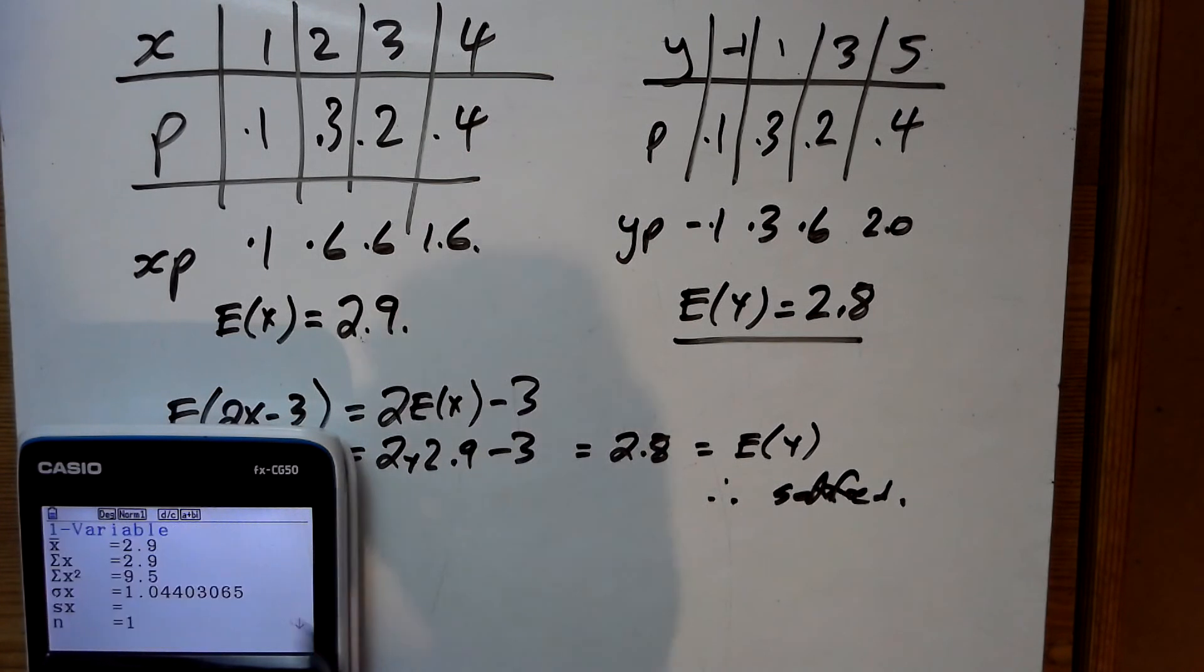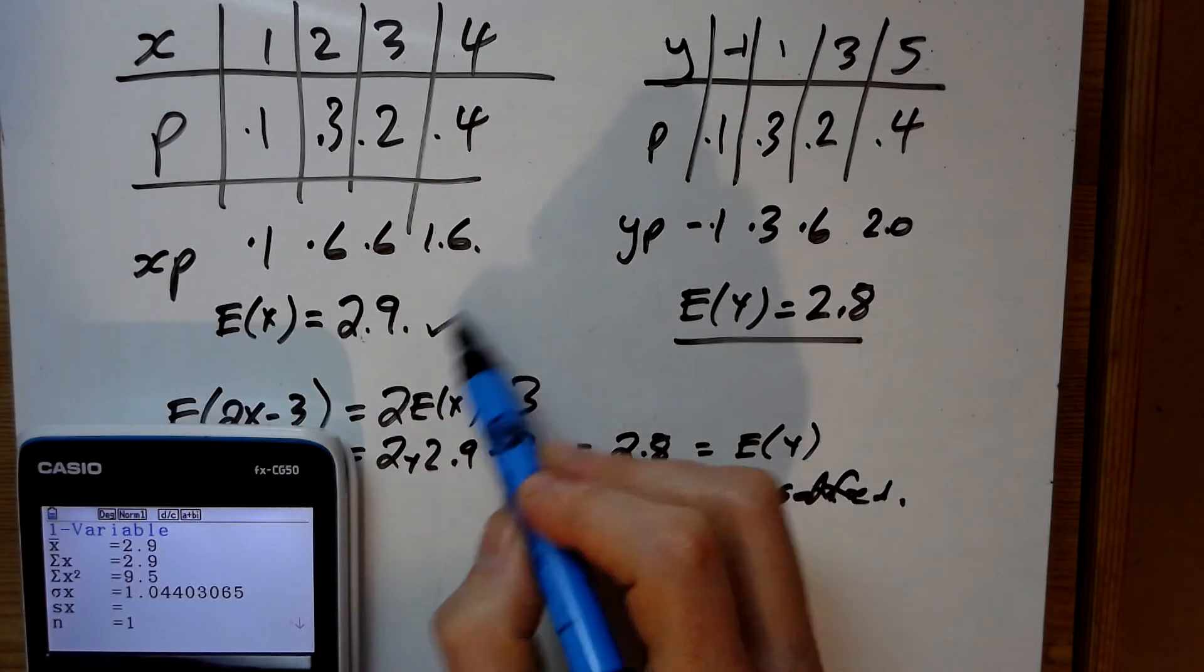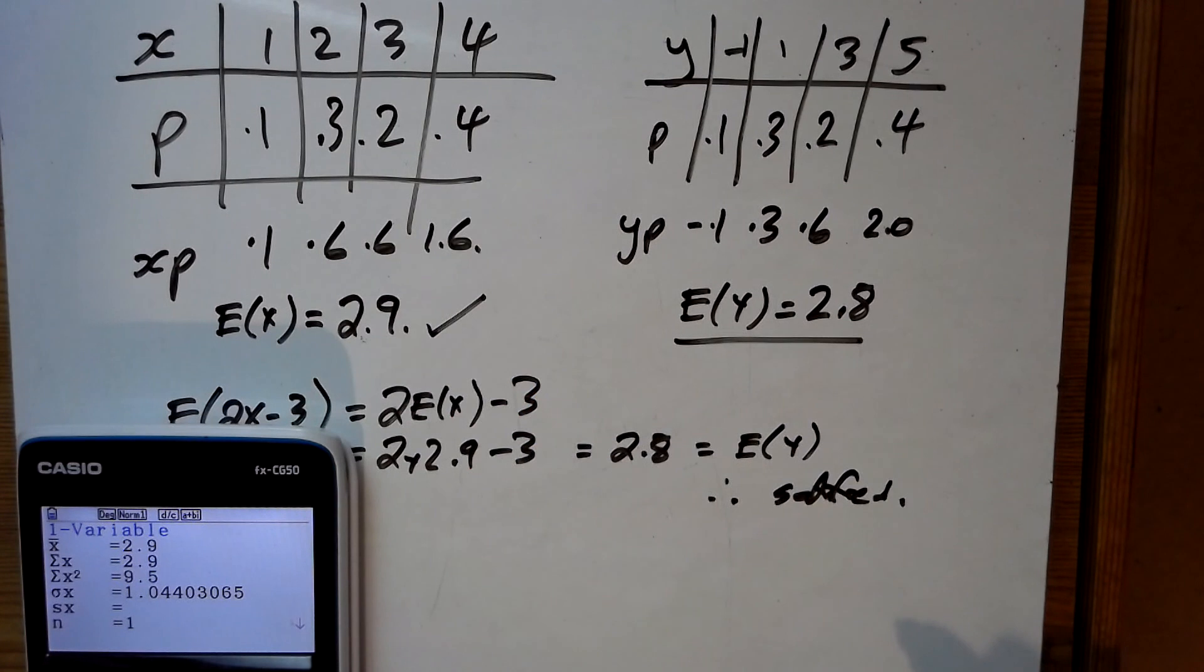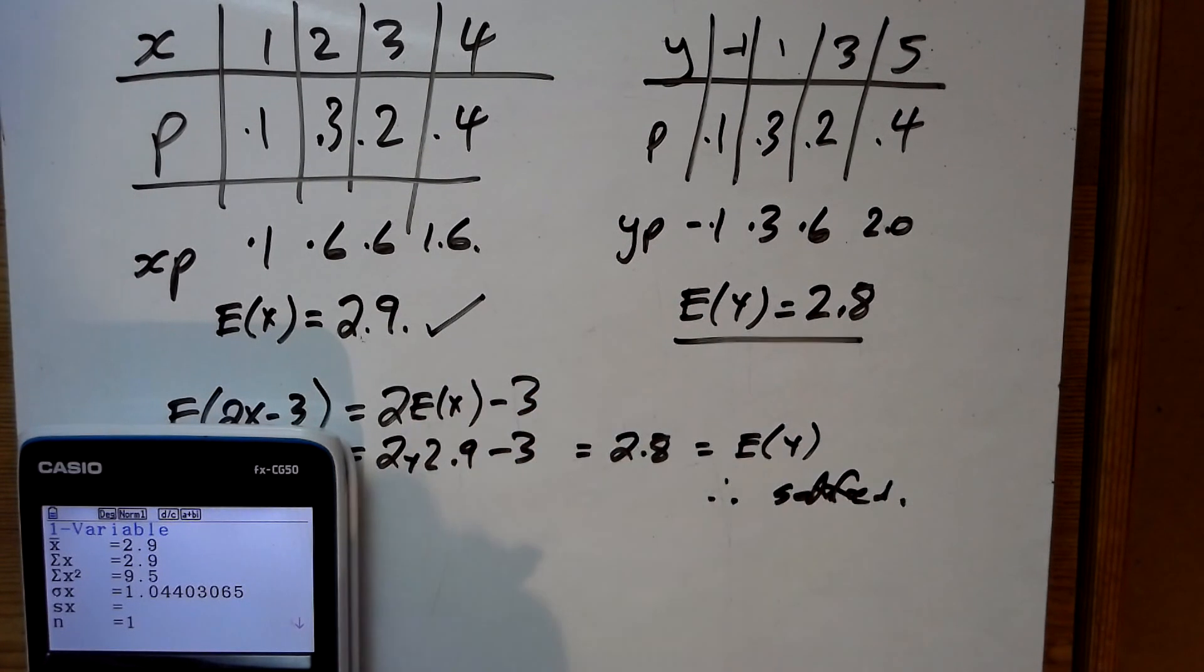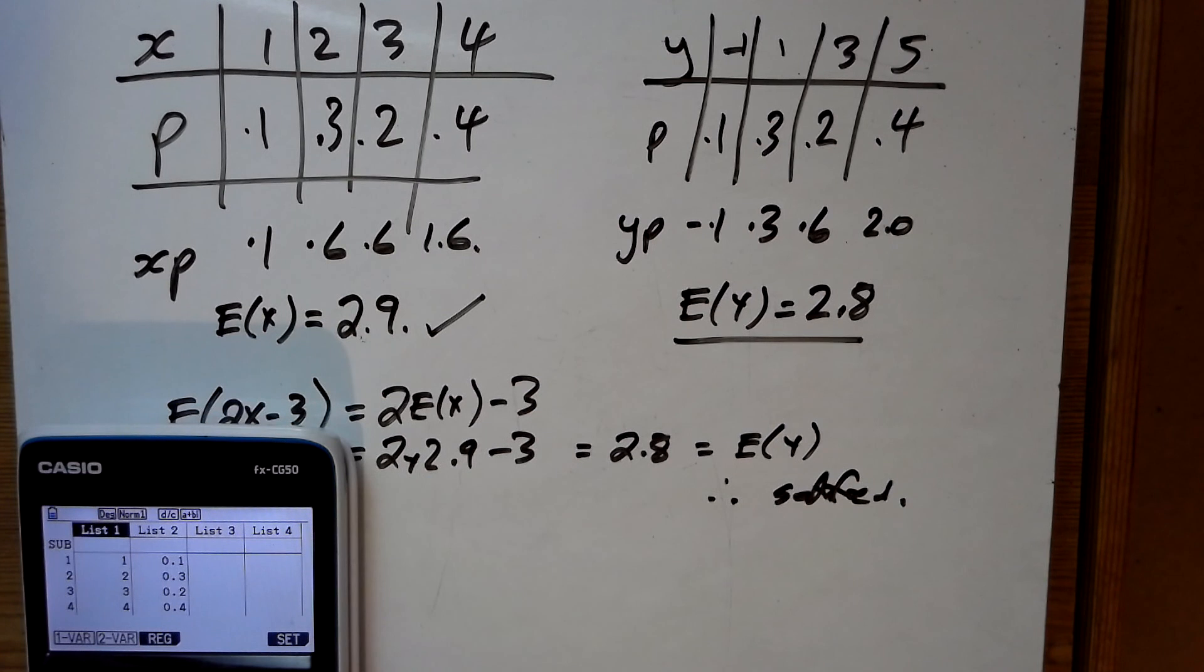So that gives us expected value of x to be 2.9 as we thought it was going to be. And a nice thing we can do here is just change the list, change this list to 2 times list 1 and what was it, take away 3.